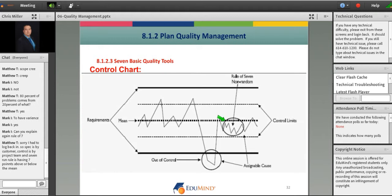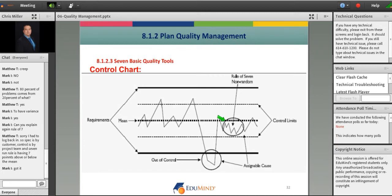That just means the process is out of control. Find the assignable cause. Basically all the rule of seven is, is when you have seven or more, and the key here is consecutive data points, that can be either below or above the mean. Does that help Mark? And then Matthew, I'll tackle yours here.